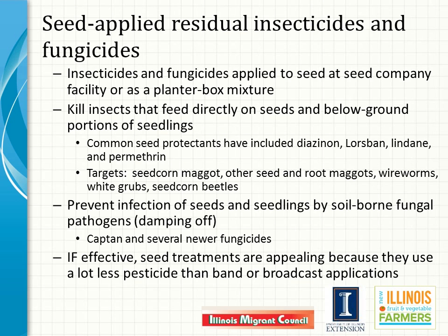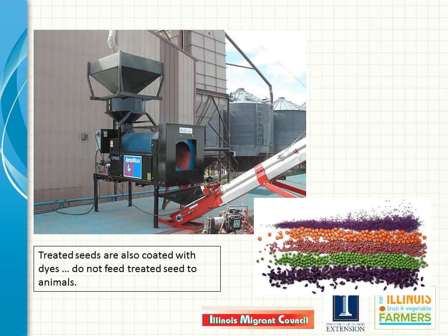Where protecting seeds from insects or fungal pathogens is necessary, growers may buy treated seed or, in a few instances, apply treatments onto seeds after purchase. Most residual insecticides and fungicides used in this way are not systemic — they do not move upwards via the vascular system to above-ground portions of plants. In comparison with band or broadcast applications of insecticides, seed treatments use far less insecticide on a per-acre basis. Consequently, seed treatments are preferred over band or broadcast applications if they effectively control the target pest. Seeds that have been treated with an insecticide or a fungicide are always coated with a dye as well to indicate that the seed should not be used as feed, so never feed colored seed to animals.